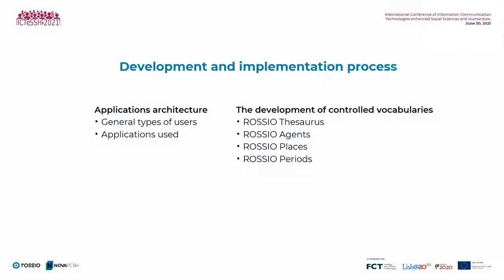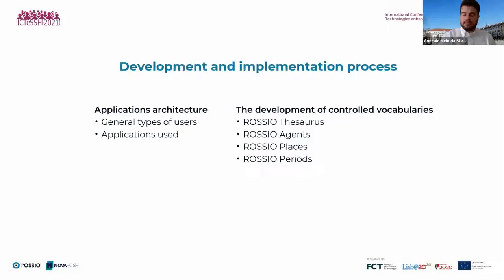In addition to SKOS, the vocabularies reuse elements from other widely used ontologies such as BIBO and FRBRoo. The development of ROSSIO vocabularies leverages existing structured and unstructured vocabulary resources, including index term lists provided by consortium members, as well as established thesauri in social sciences, arts and humanities such as the Getty Art and Architecture Thesaurus. As linked data resources, it is fundamental for ROSSIO vocabularies to include links to external resources identified through URIs, achieved by declaring mapping properties between concepts in ROSSIO vocabularies and external knowledge organization systems.